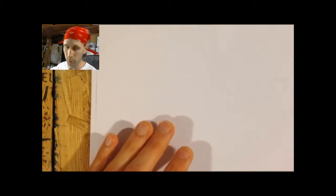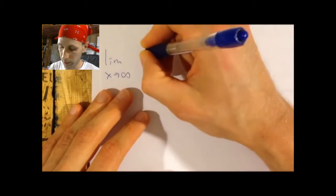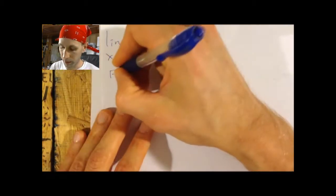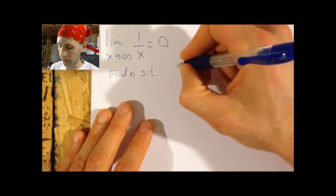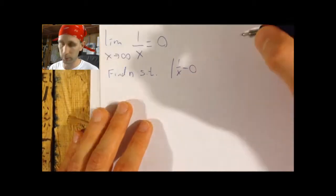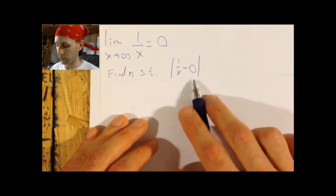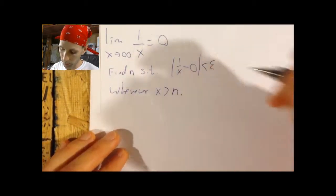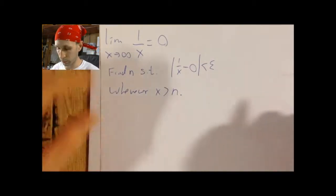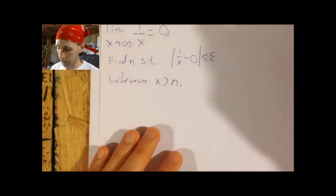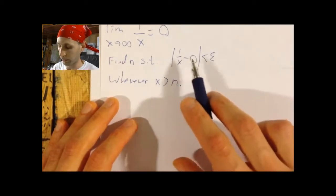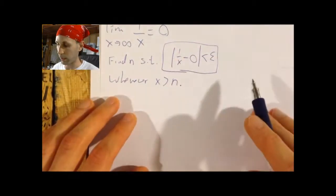I have a nice example to break us in to this concept, and that is the one I just showed: the limit as x approaches infinity of 1 over x. We know that limit is 0. But what does it take to actually show that? It means we have to find an N such that the absolute value of 1 over x minus 0 — because we suspect 0 is the limit — can be made less than epsilon whenever x is greater than N.